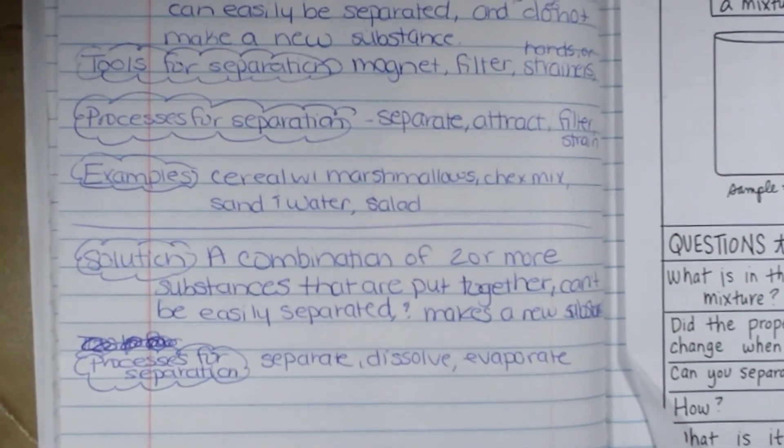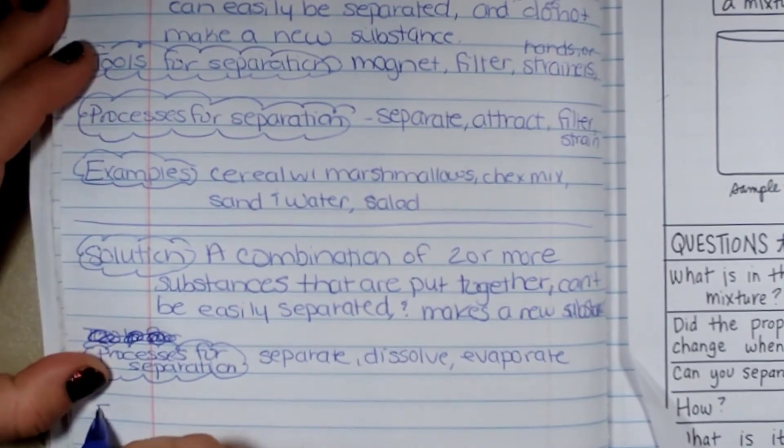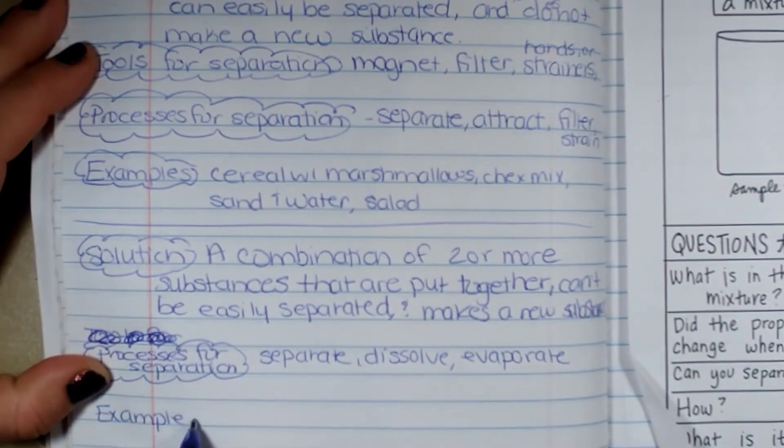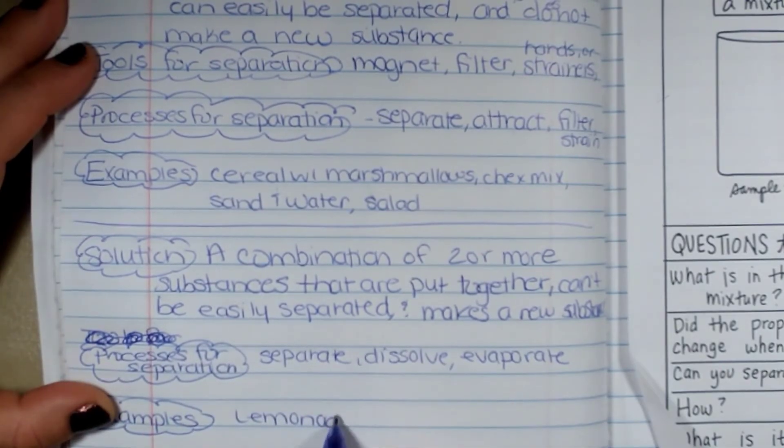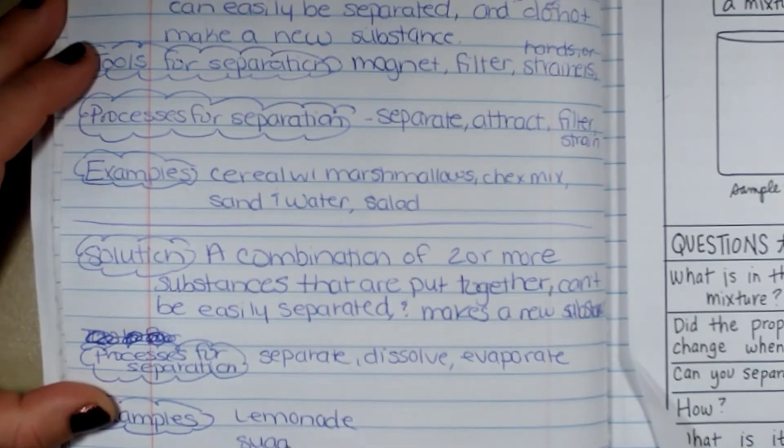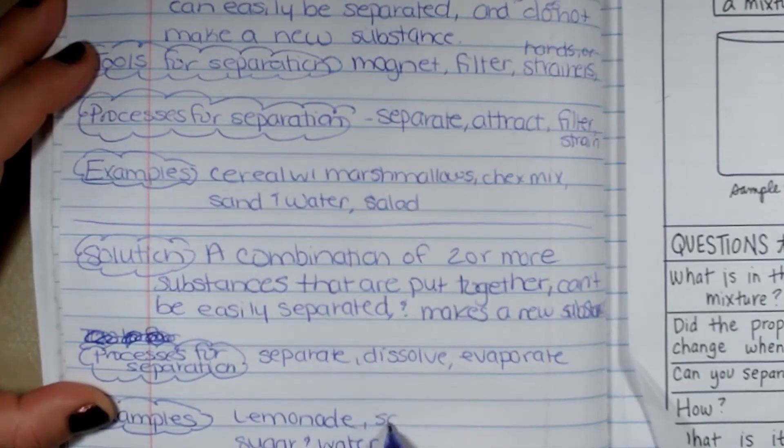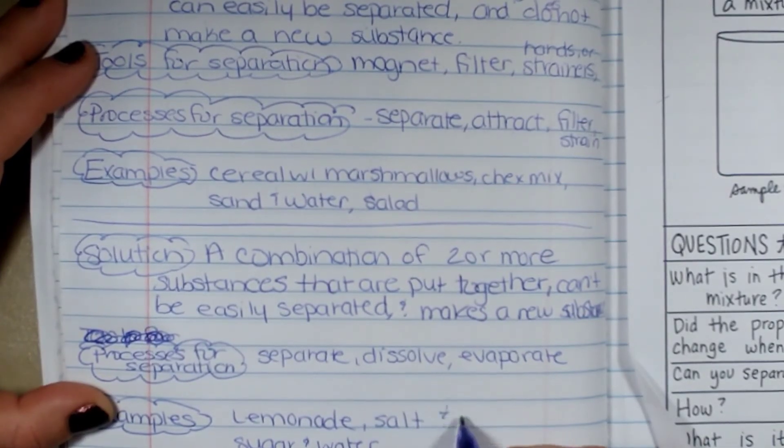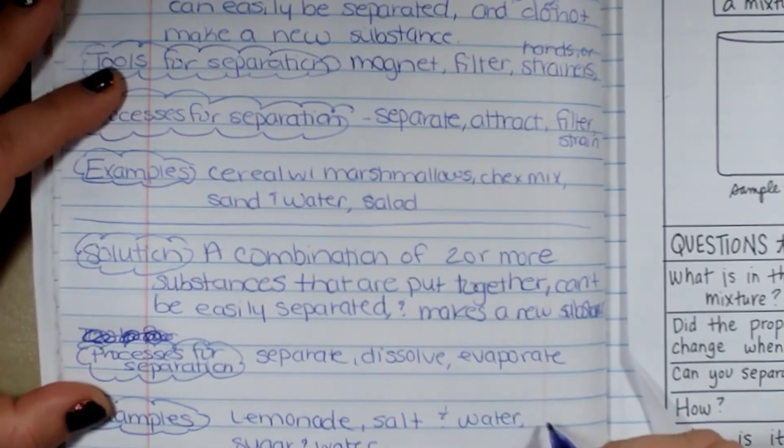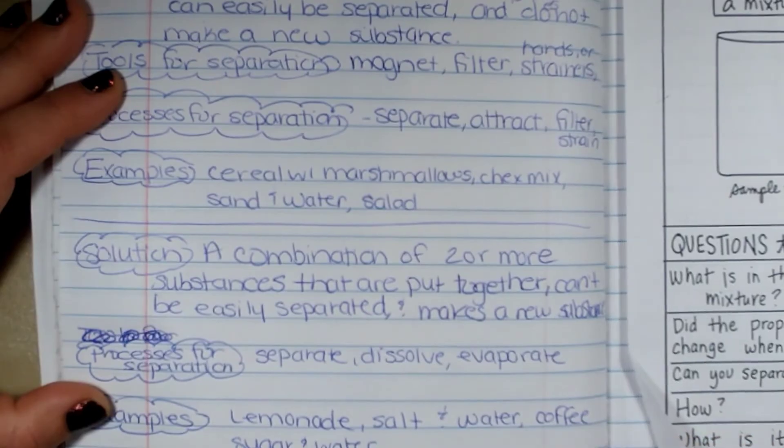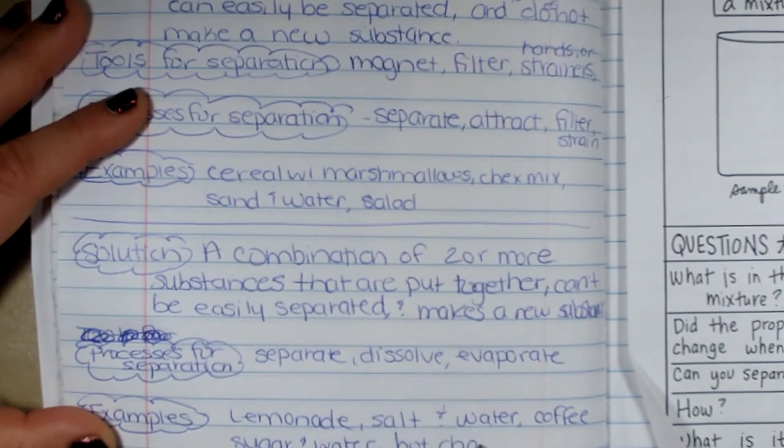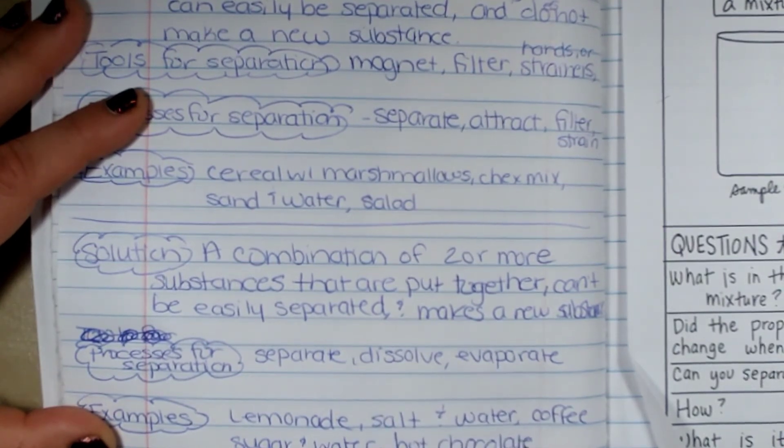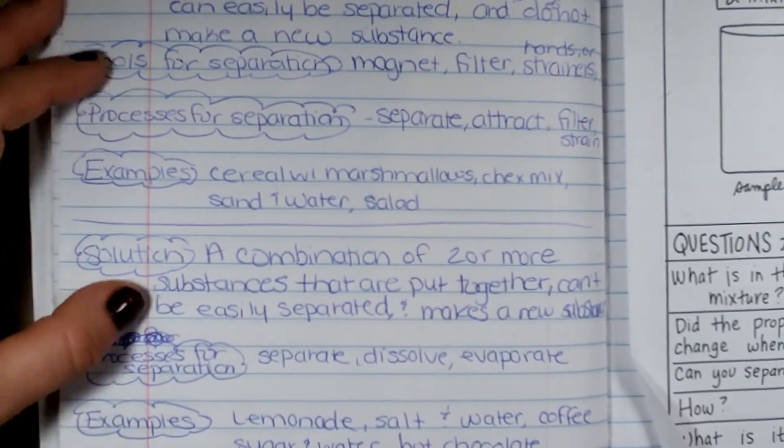Some examples of things that are solutions could be like lemonade, sugar water, salt and water, coffee, and hot chocolate. Those are our examples of mixtures and solutions.